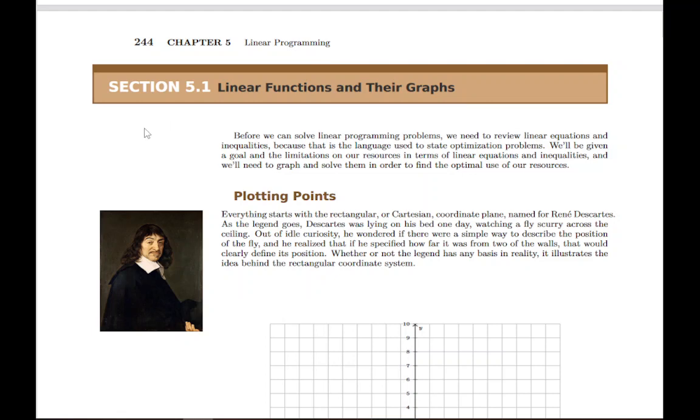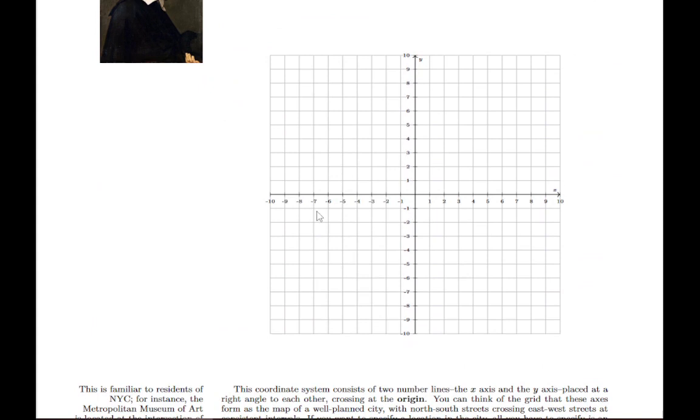We start this section just with a quick review of plotting points on a grid. We've got this familiar XY grid, which is really just two number lines that are set up perpendicular to each other and they define this grid of points. So we can tell where we are anywhere on this grid by telling the coordinates of that point.